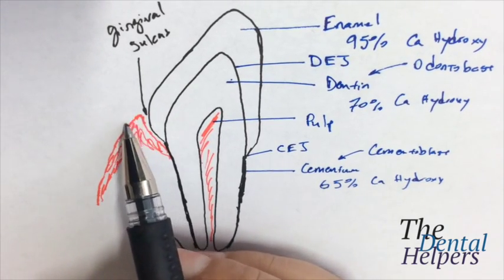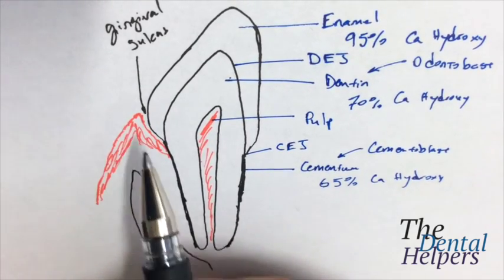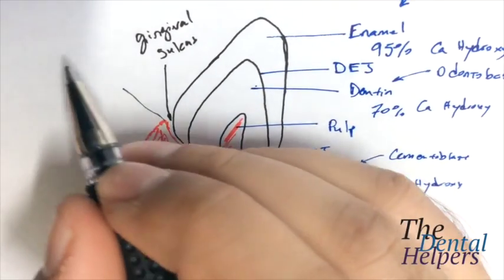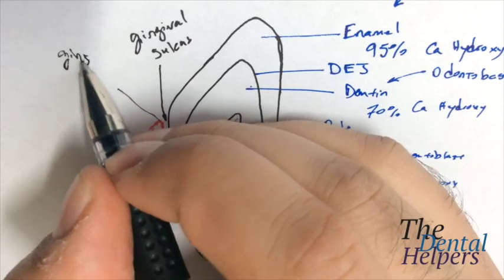If you look right here, it looks like this is the margin of the gingiva. And so it's named, you guessed it, the gingival margin.